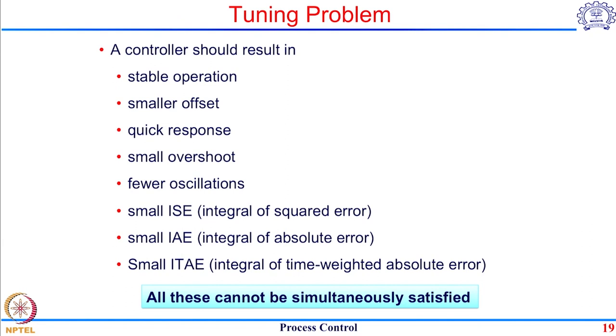There are many different criteria you can impose on the closed-loop response, and you will realize that not all of these requirements can be met by a single controller — many are mutually exclusive. For example, if you want to improve the speed of response, the oscillations in the system increase, as we have seen when analyzing the response of an underdamped second-order system. So if you want to improve speed, you have to give away in terms of oscillations. The bottom line is that all these cannot be simultaneously satisfied; you must pick the ones most important for the process and go forward in designing the system.